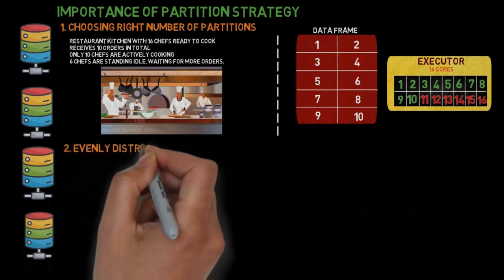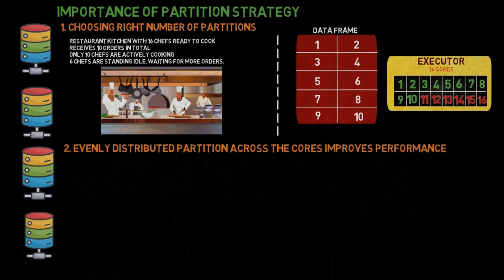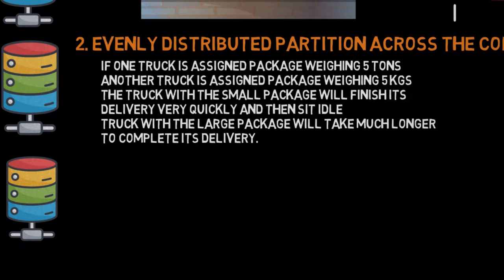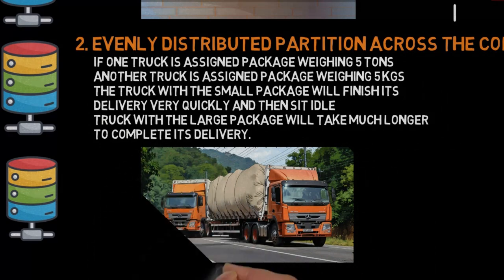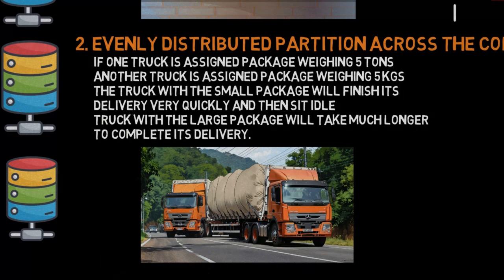Evenly distributed partition across the cores improves performance. Imagine a delivery company with several trucks and packages to deliver. If one truck is assigned a large package weighing 5 tons, and another truck is assigned a small package weighing 5 kilograms, the truck with the small package will finish its delivery very quickly and then sit idle,